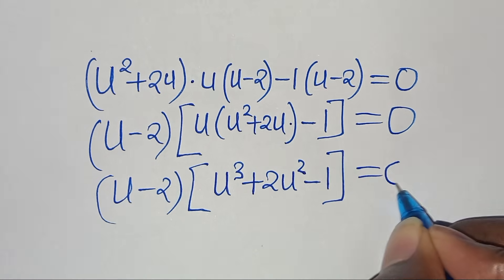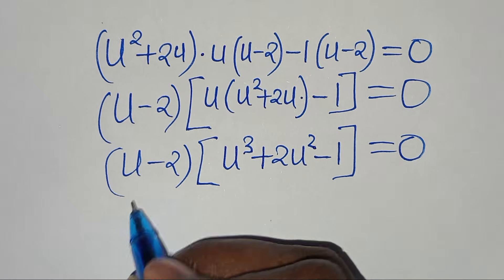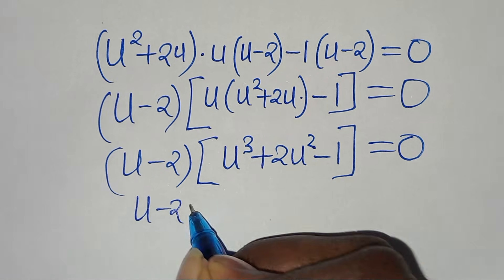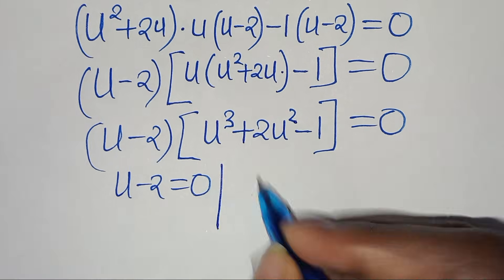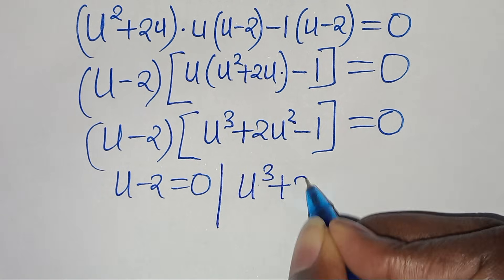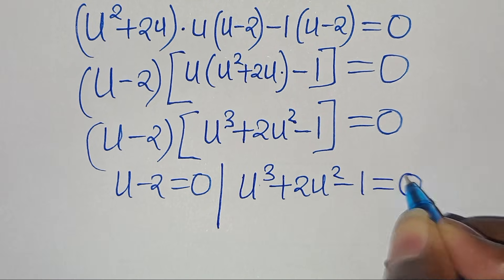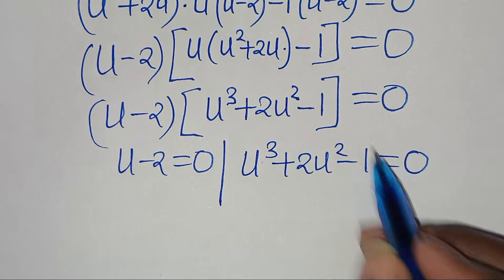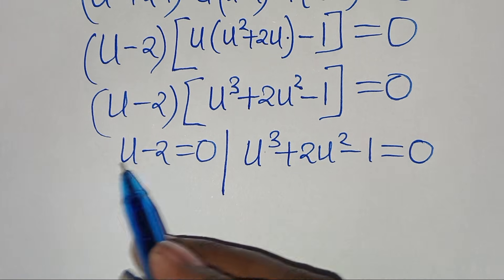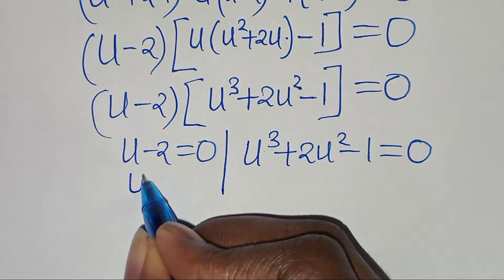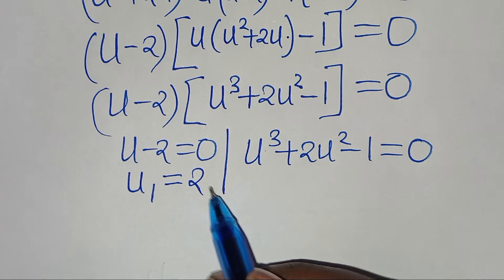So we have two parts. The first part is (u minus 2) equals 0, and the second part is u to the power of 3 plus 2u squared minus 1, equals 0. The second part is a cubic function, or a polynomial of degree 3. For the first part, we have that u₁ is equal to 2.